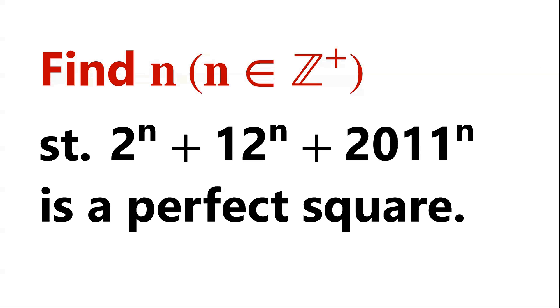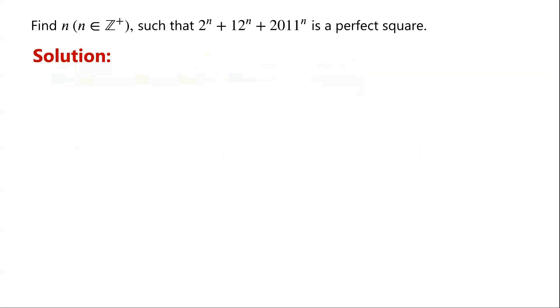Find all positive integers n such that 2 to the power of n, plus 12 to the power of n, plus 2011 to the power of n, is a perfect square. We will divide the problem into three cases.